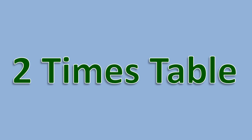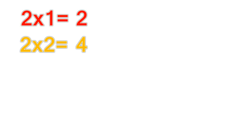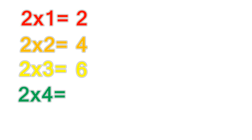2 times table. 2 times 1 equals 2. 2 times 2 equals 4. 2 times 3 equals 6. 2 times 4 equals 8. 2 times 5 equals 10.